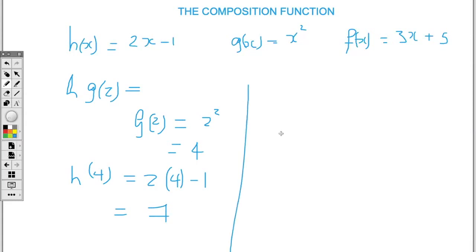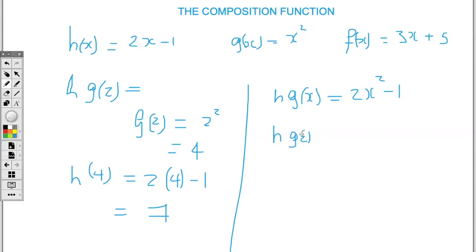You could also be asked to find h(g(2)), where first we substitute 2 into the function g. So let's find g(2): replace x with 2, so I have 2 squared which gives me 4. Then this result must be substituted into h, so I have h(4), which means 2 times 4 take away 1. So 2 times 4 is 8, take away 1, I'm left with 7. Whichever method you use, you get the same answer.